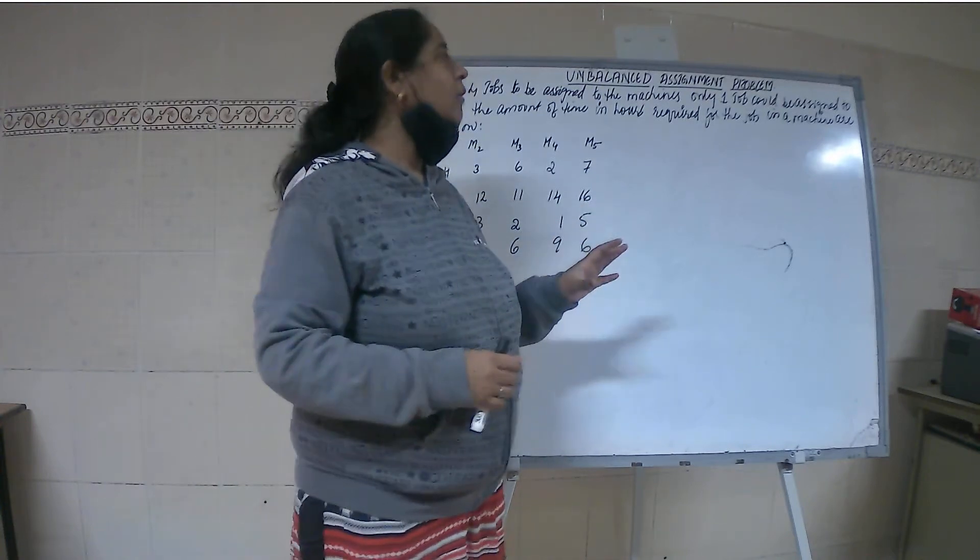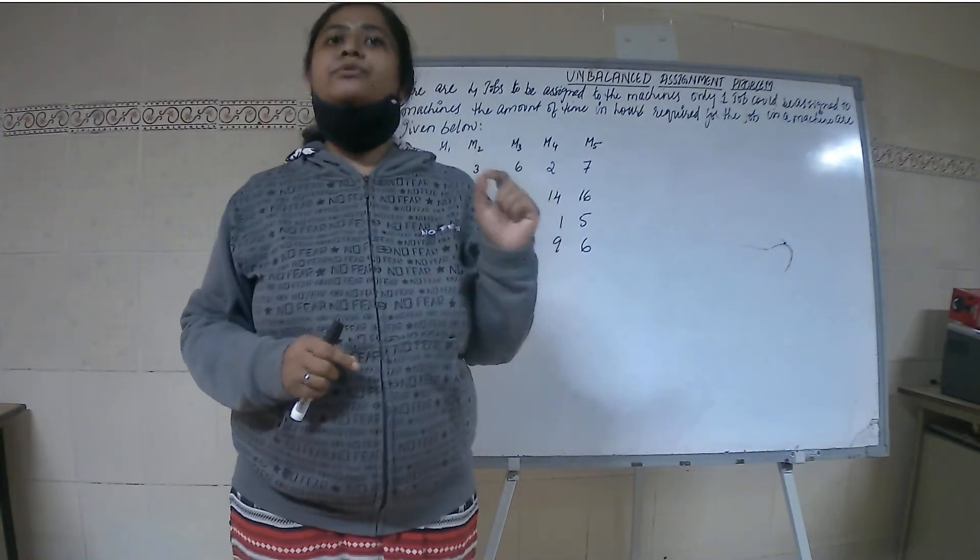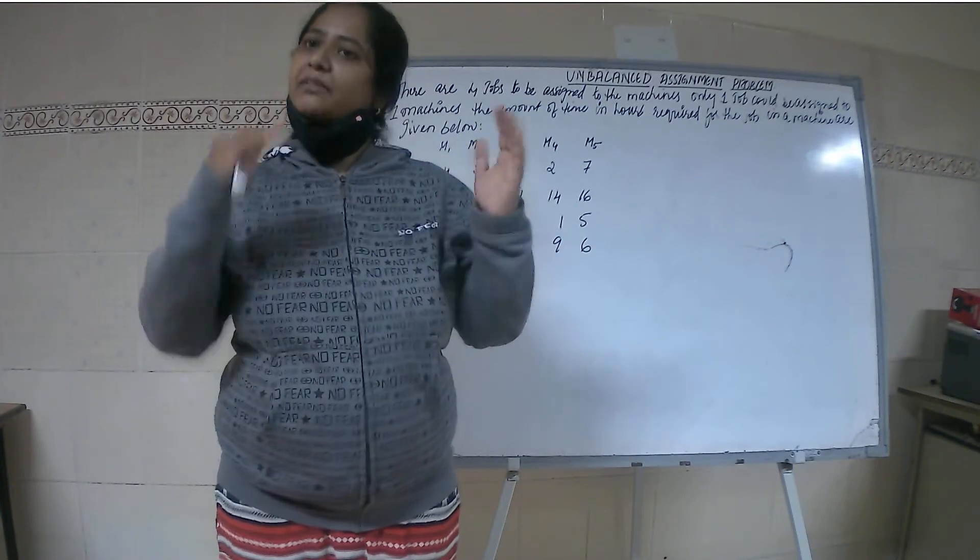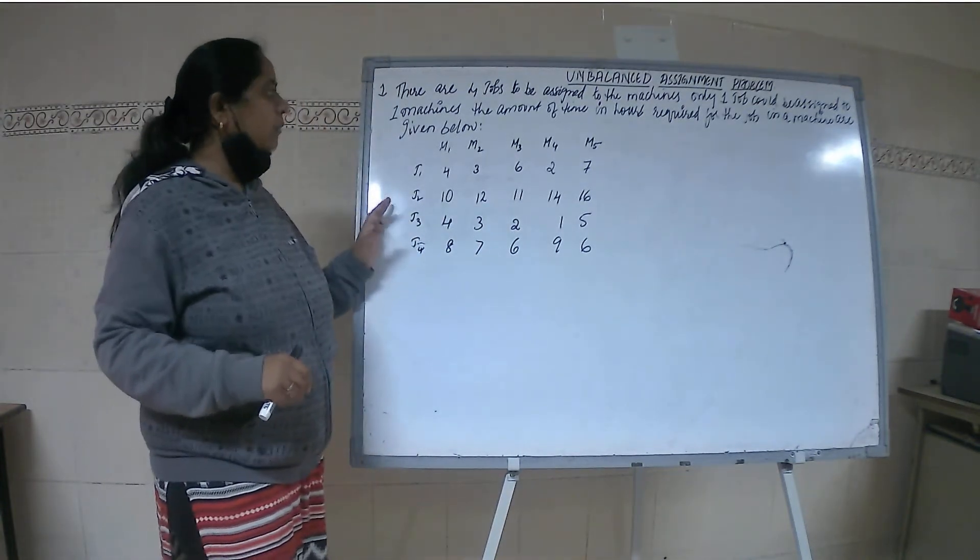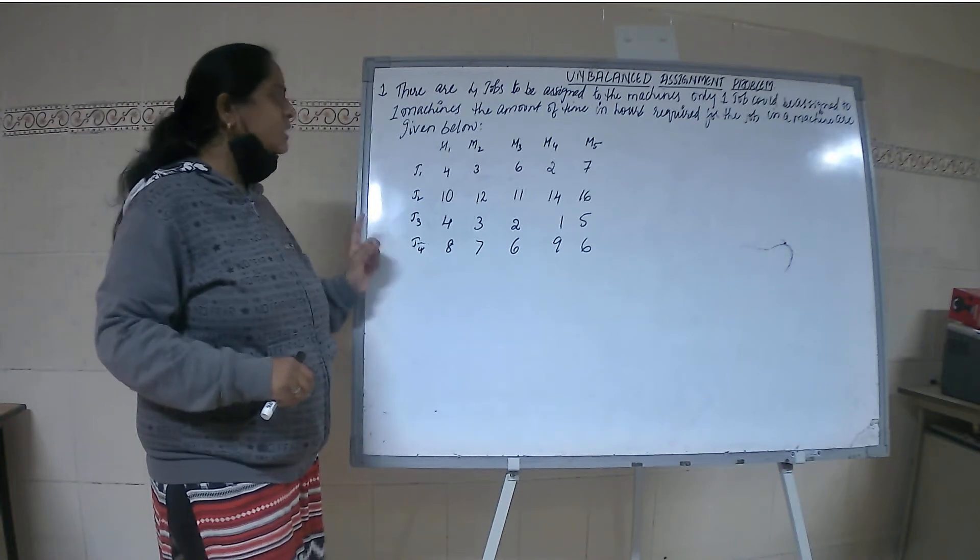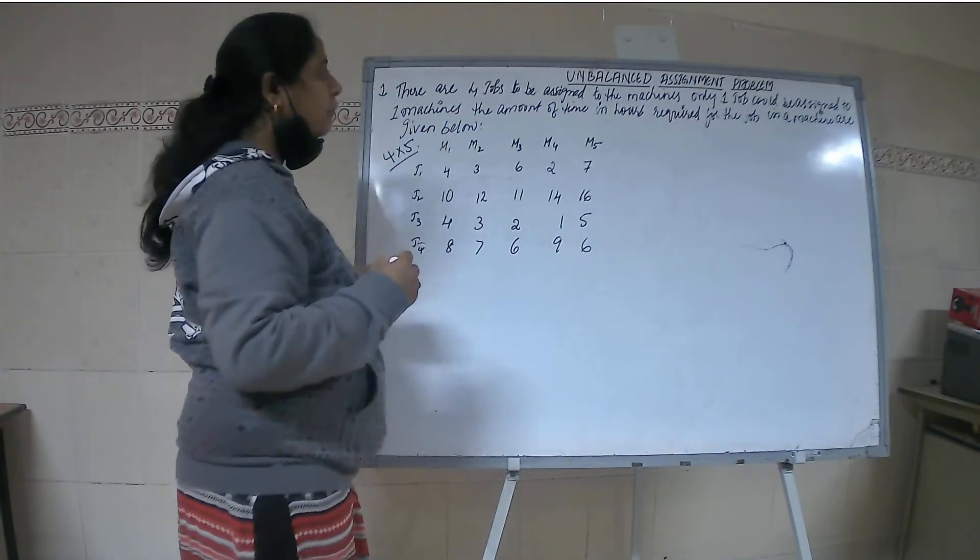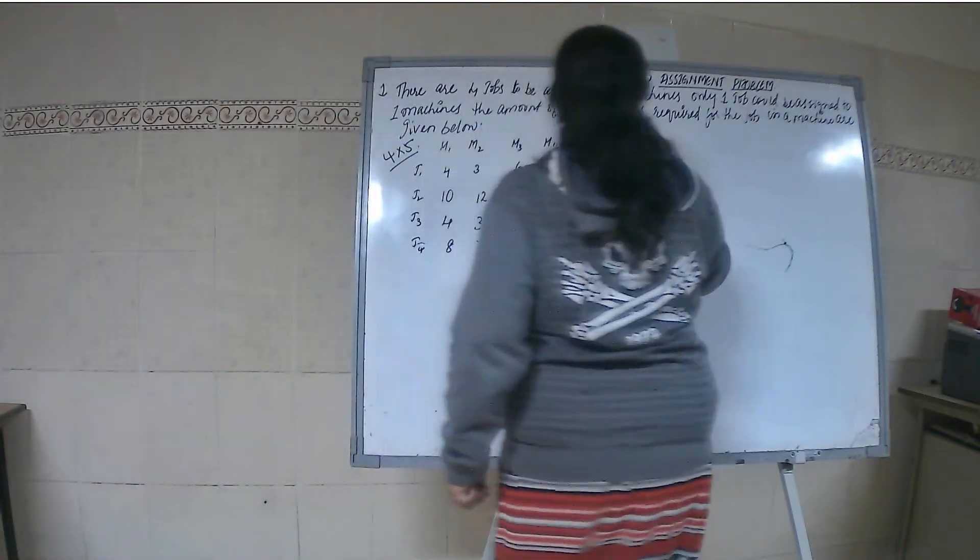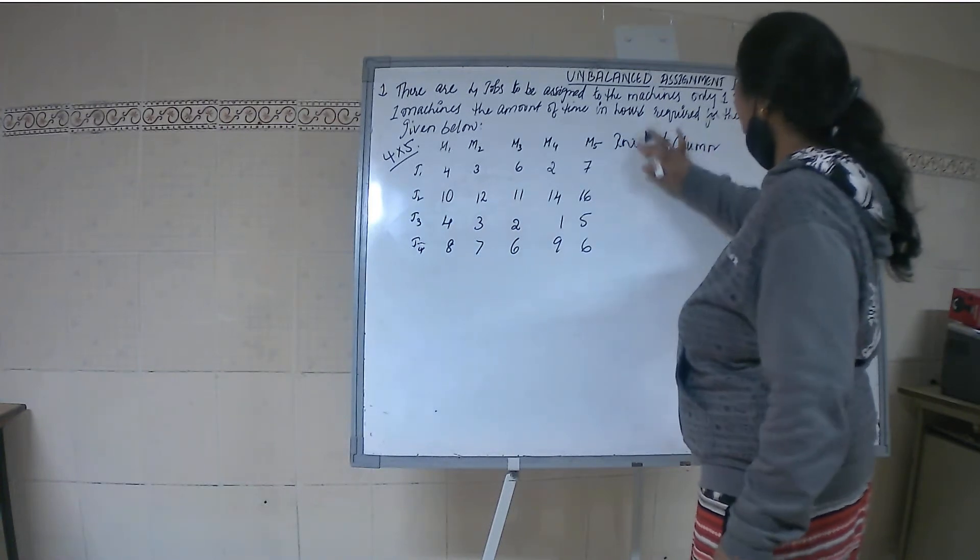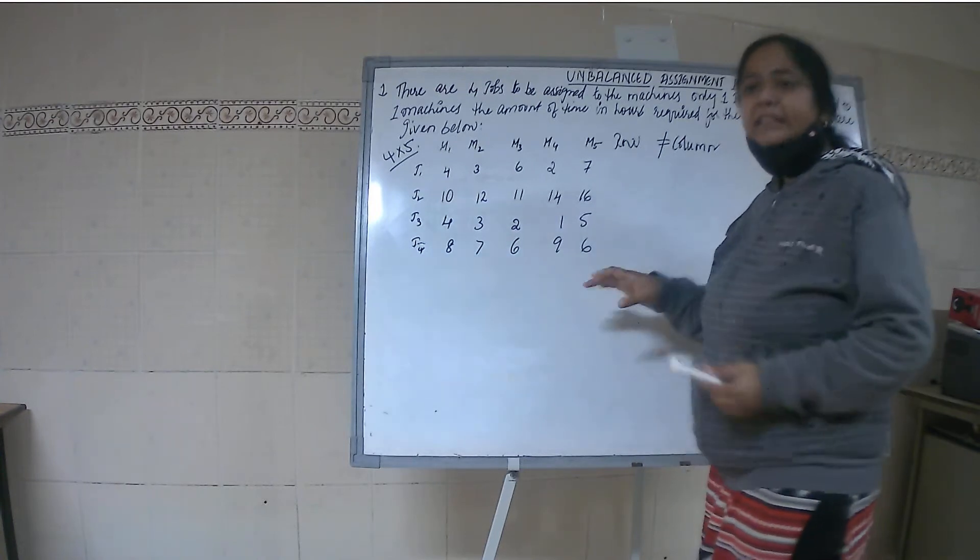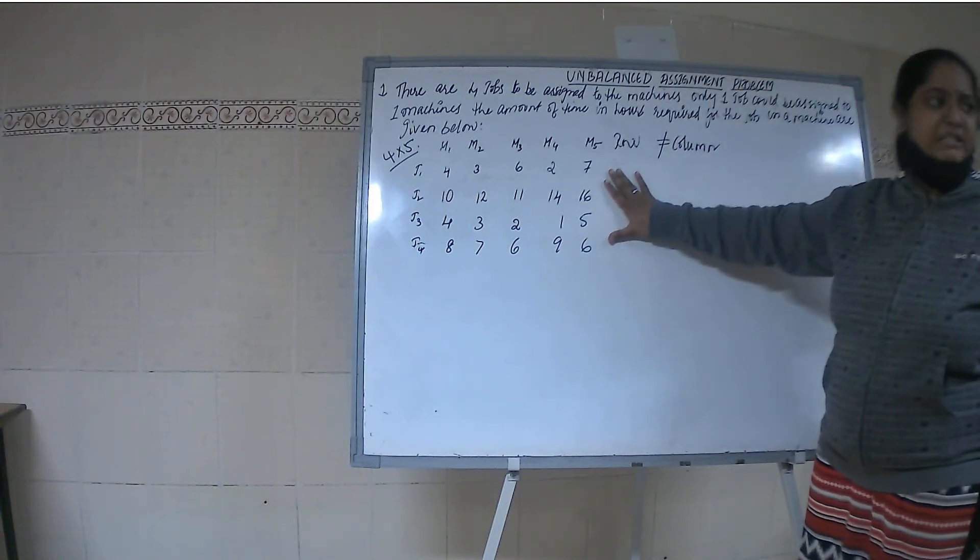Now we are going to come across another topic called unbalanced assignment problem. So far we have seen problems where number of rows equals number of columns. But if you can see this problem which is given has 4 rows and 5 columns - a 4 by 5 matrix. When number of rows is not equal to columns, the concept comes here is unbalanced assignment problem.